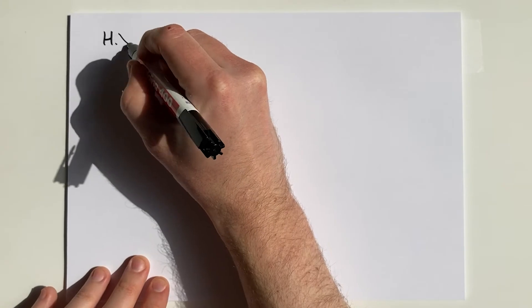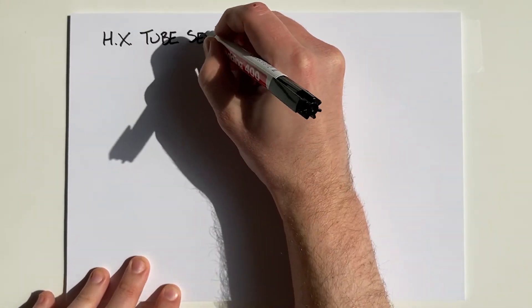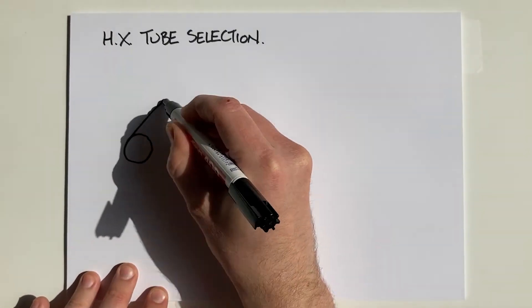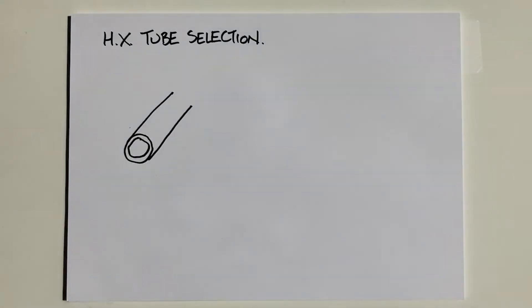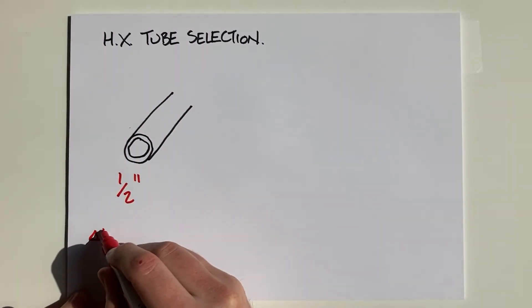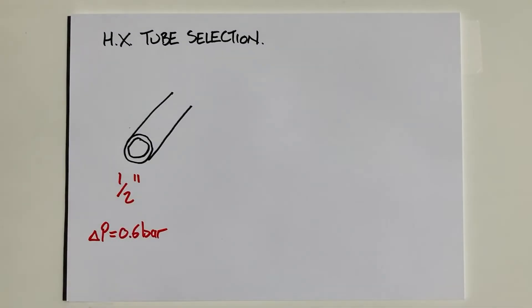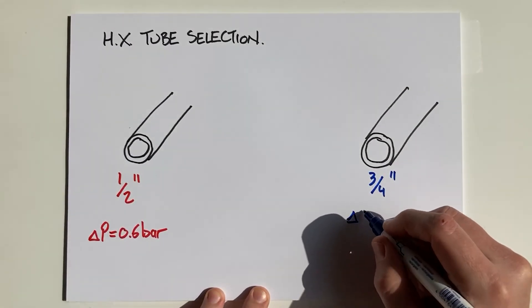So, you've accepted your half a bar worth of pressure drop for your heat exchanger. You set out to do the design and pick a tube size. Let's say you pick half inch tubes. You do the calculation and you see that the pressure drop for this heat exchanger will be 0.6 bar. That's more than your budget because your tubes are too small — the velocities are too high. You need larger tubes. So you pick the next standard size up: three quarter inch tubes, and you go through the process again and calculate that the pressure drop is now 0.4 bar.